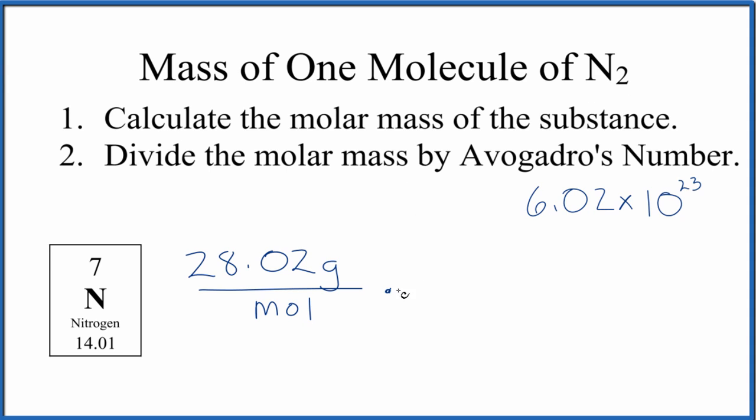We're going to multiply this by a conversion factor because we know that one mole of any substance is Avogadro's number of particles. We're still just dividing the molar mass, 28.02, by Avogadro's number. Now we have moles here and moles here. They cancel out. That's going to leave us with grams, so we know we've done this correctly.